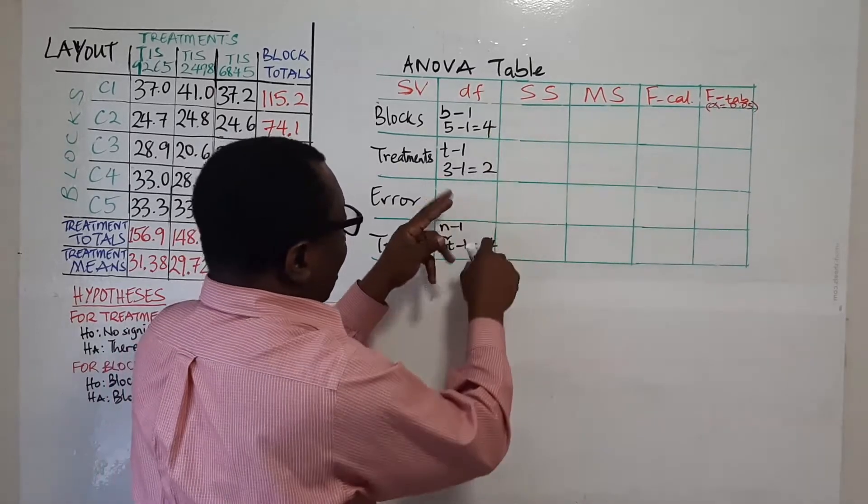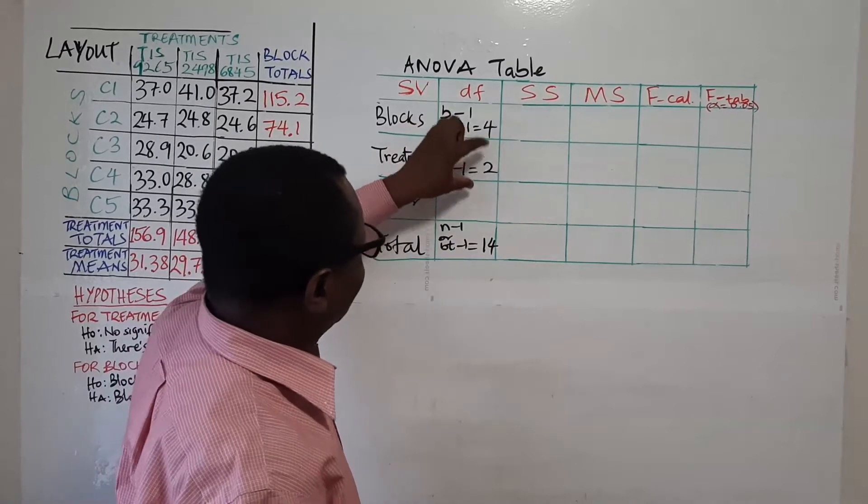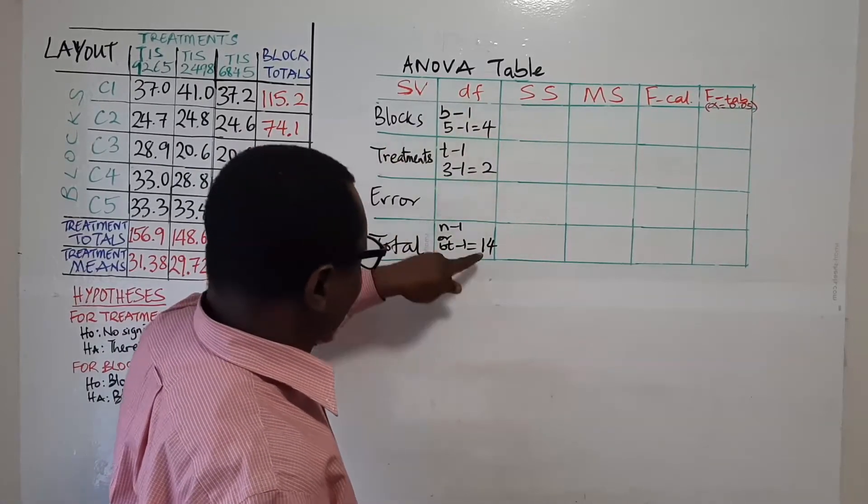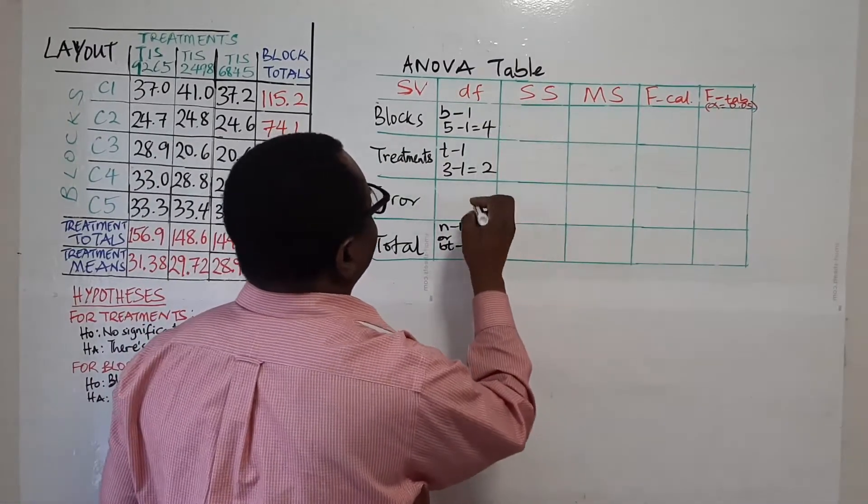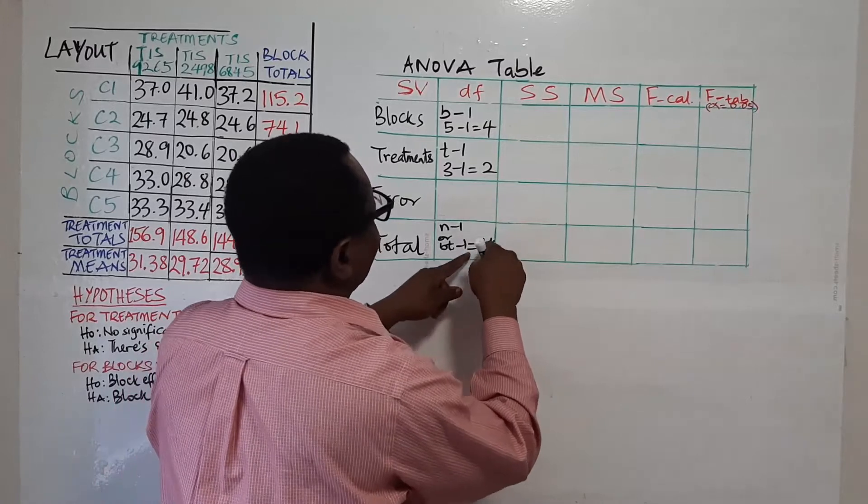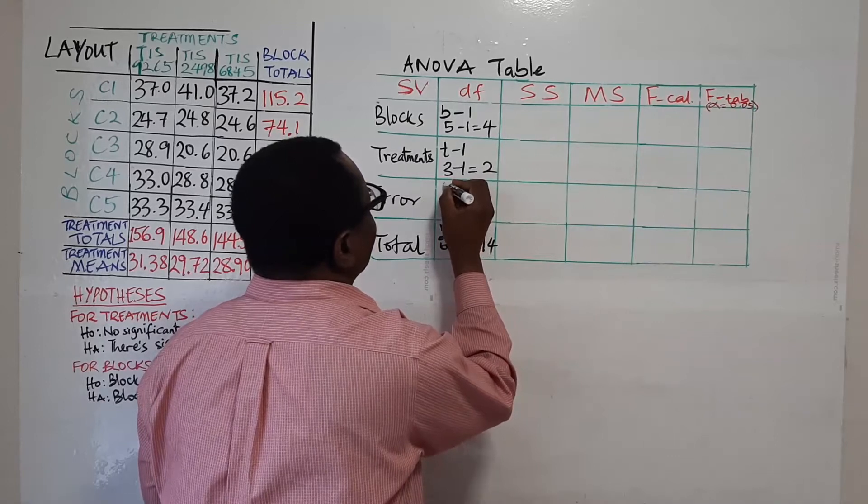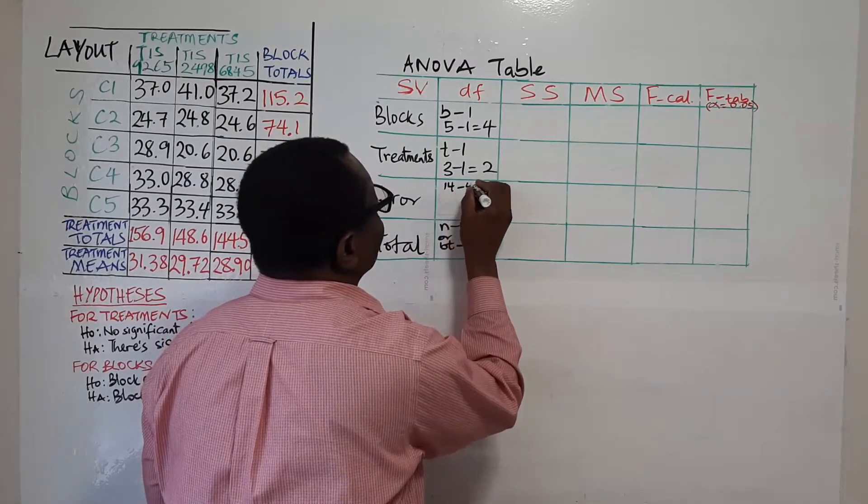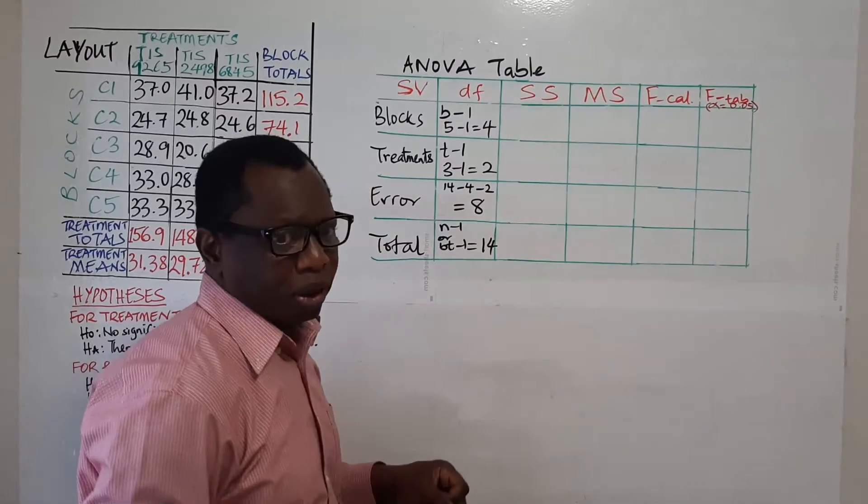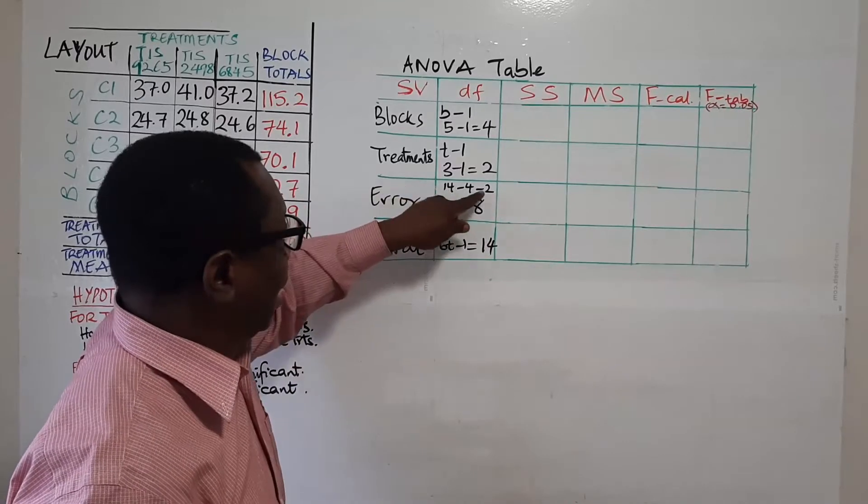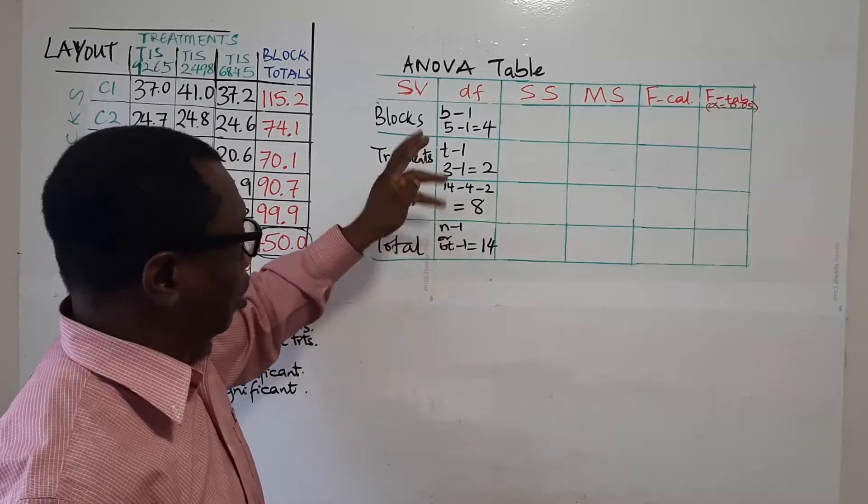So once you have this now you can easily estimate error. How? By subtracting these other degrees of freedom that's for blocks and treatments from your total df. So if you subtract that it will be fourteen minus four minus two. And that will give you eight. So at least putting it here helps you to remember how this eight came about.